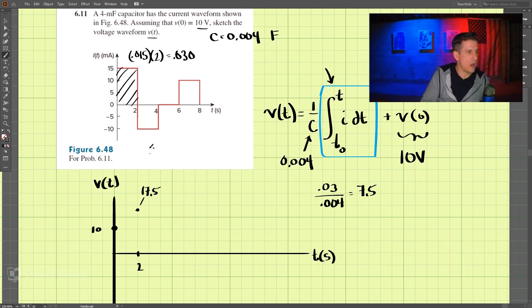Okay, now what we do here is find this value, and that is 2 seconds times negative 10. So that's negative 20 divided, I'm sorry, this is milliamps, so that's negative 0.02, and then we divide it by the 0.004. Negative 0.02 divided by 0.004, that's negative 5, so we add negative 5 to this value. So that comes out to be 12.5, so 12.5 there.